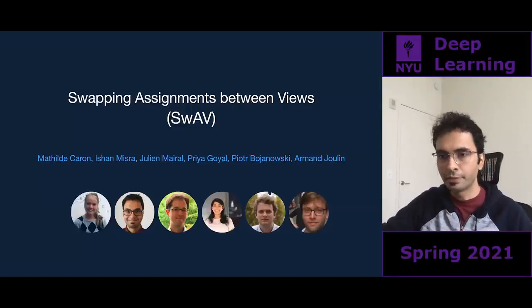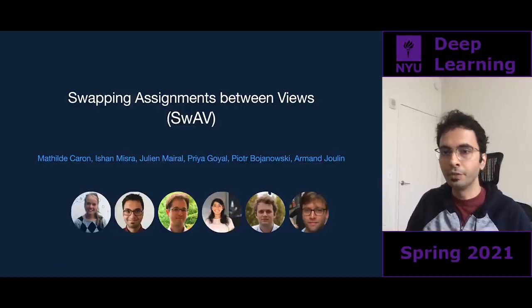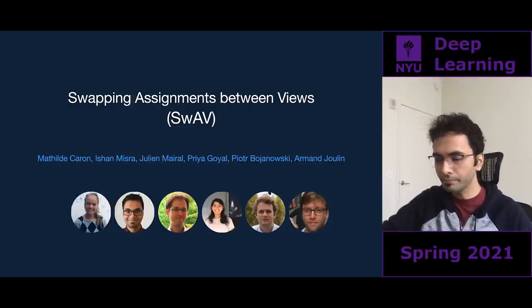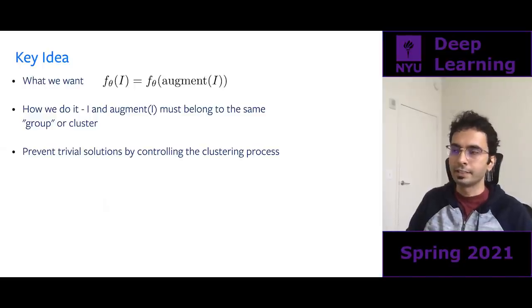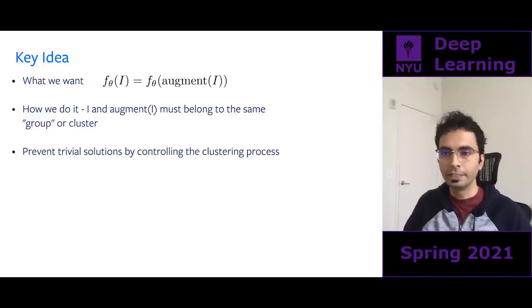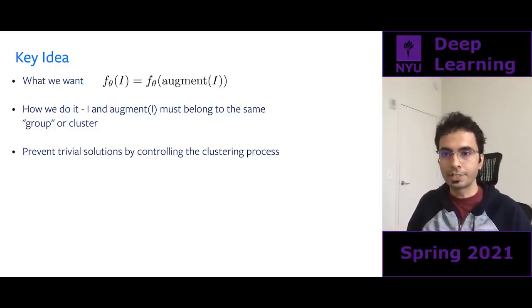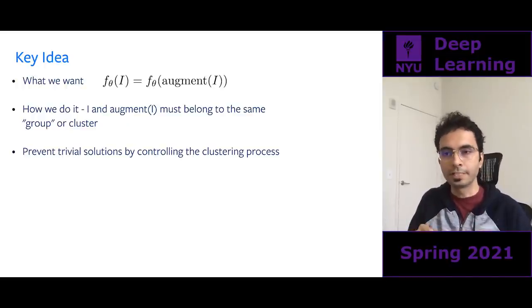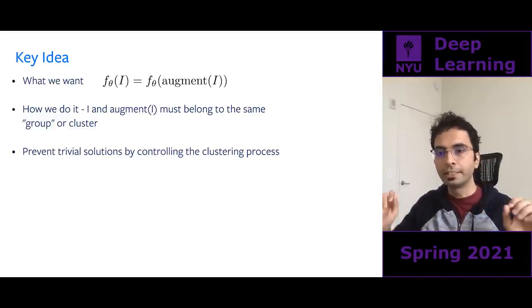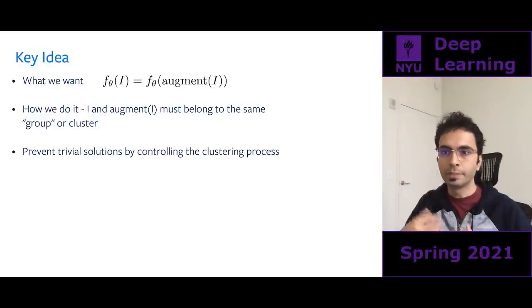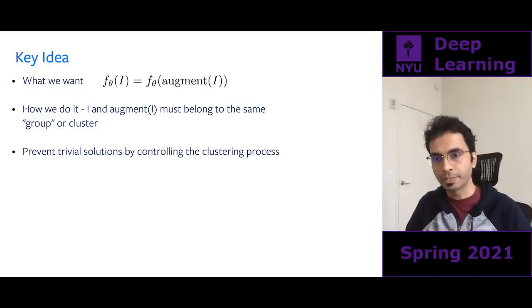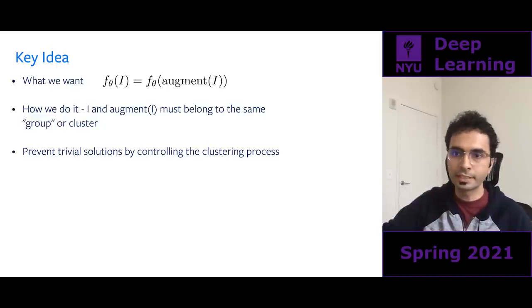In 2020 we proposed SwAV, an online clustering-based method. The key idea: we want to maximize similarity between image i and its augmented versions. We say the feature from image i and the feature from augmented image i should belong to the same group. To prevent trivial solutions — where everything gets assigned to the same cluster — we control the clustering process.